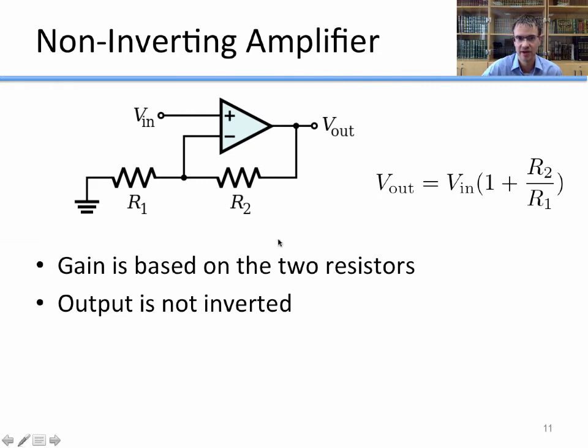Now another way you can wire up an op amp, still with just 2 resistors, is as a non-inverting op amp. And in this case, the gain is still based on the 2 resistors, but it's wired a little bit differently so that our output is not inverted. So whereas before it was minus, there was a negative sign on the front of the equation, now Vout just equals Vin times 1 plus R2 over R1.